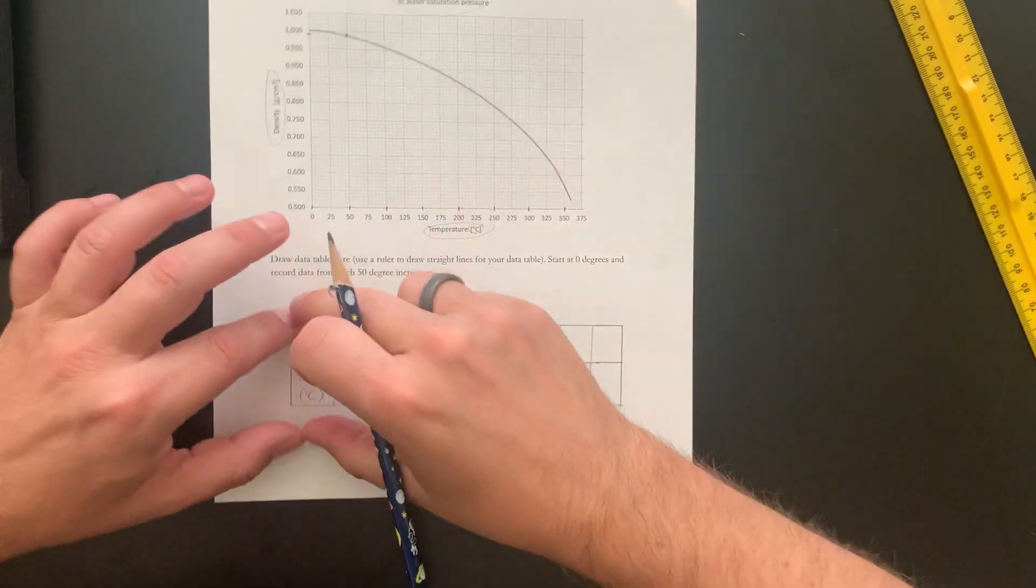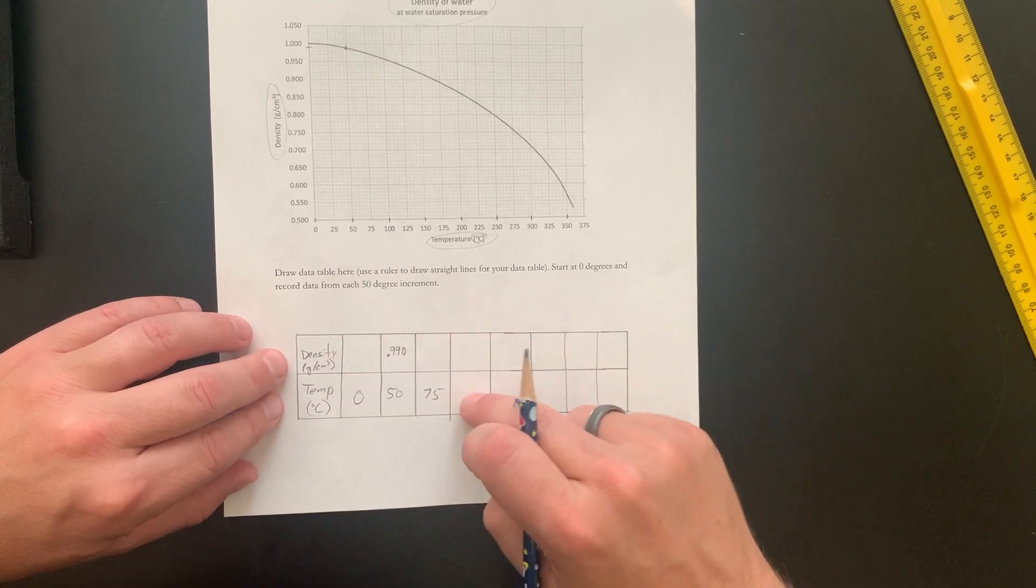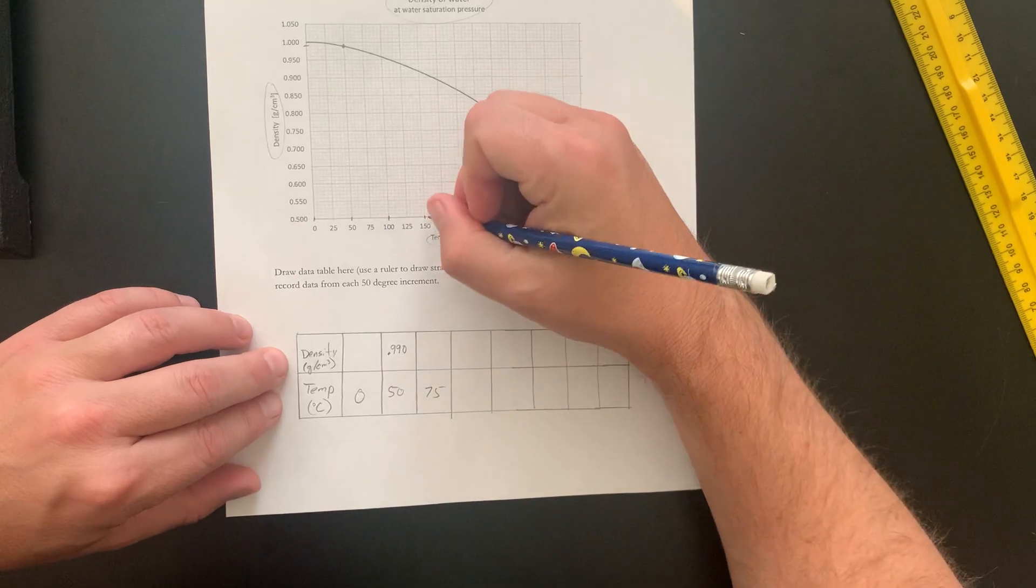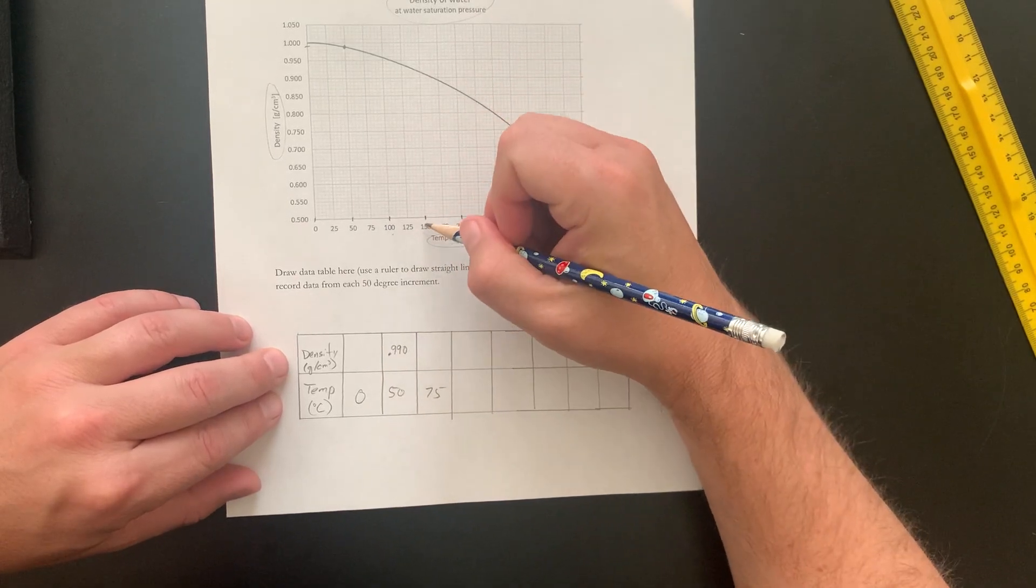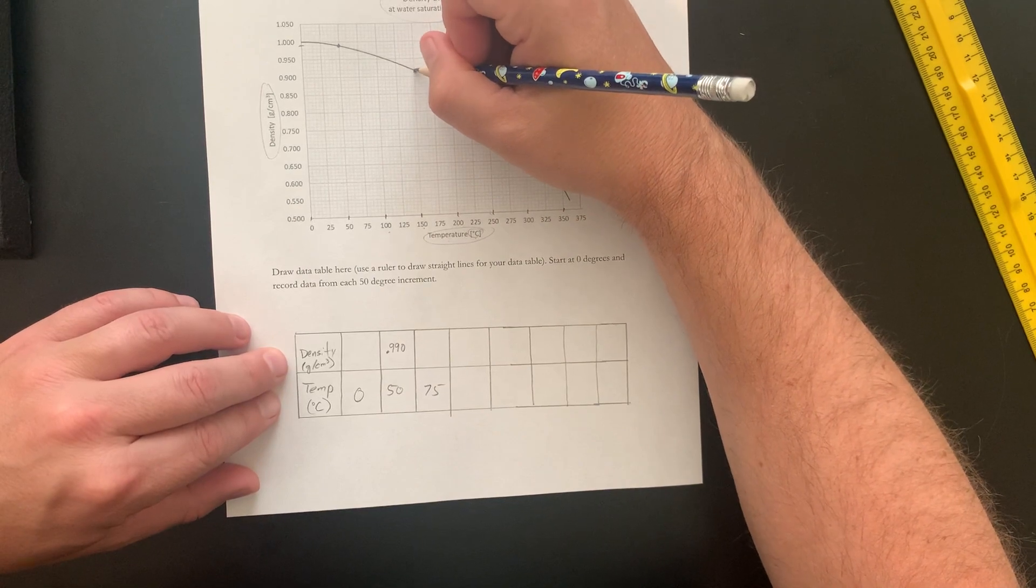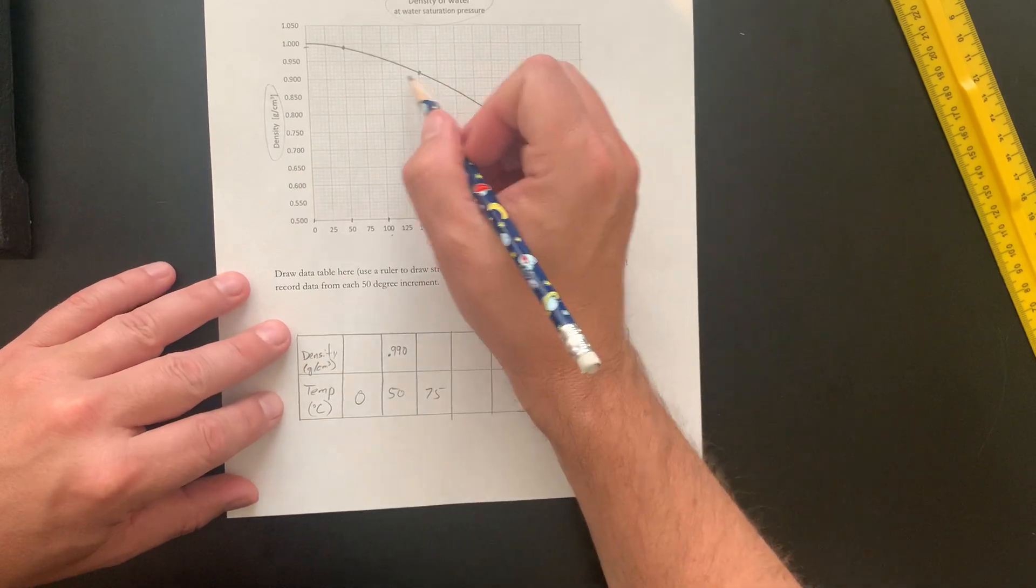So your job is to finish this data table and plug in the rest of these numbers. Again, you're going to read at certain points like 150. You're going to go all the way up to where it intersects and then come over here and figure out what that density is for 150.